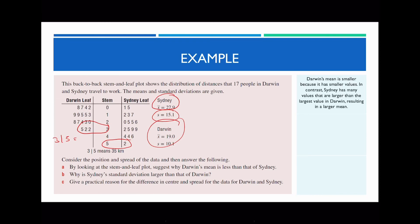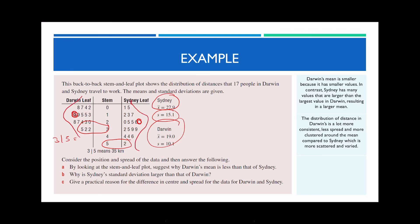For part B: why is Sydney's standard deviation larger than Darwin's? The distribution of distances in Darwin is a lot more consistent, concentrated, and less spread around the mean compared to Sydney, which is more scattered and varied. Darwin's mean lies here, and Sydney's mean is around 27.9 — roughly over here. If you look at the graph, more values in Sydney are spread out from the mean, whereas in Darwin most values are concentrated and closer to the mean. That's the answer for part B.